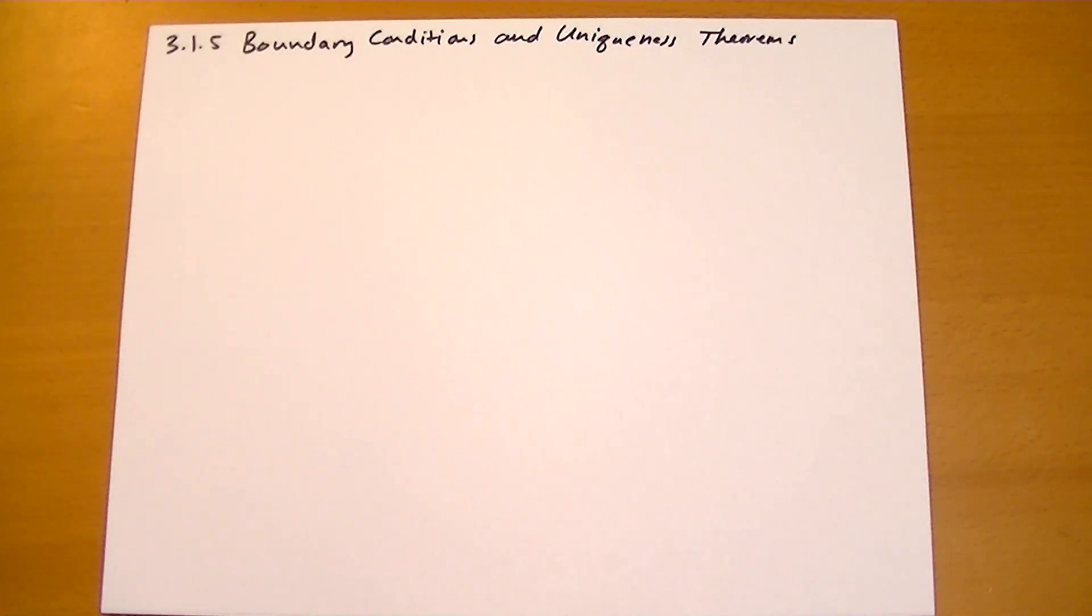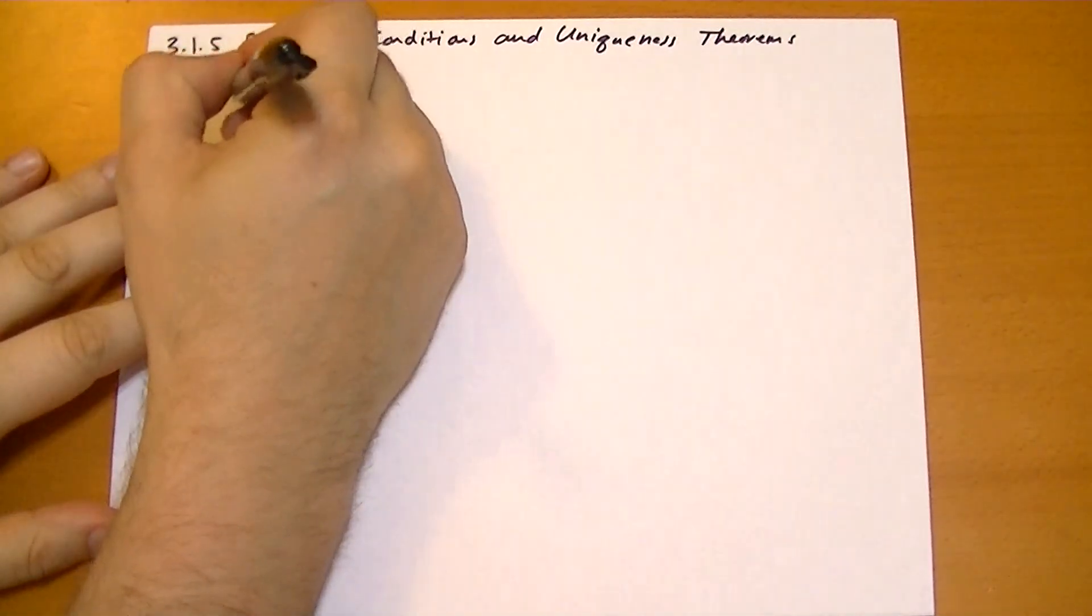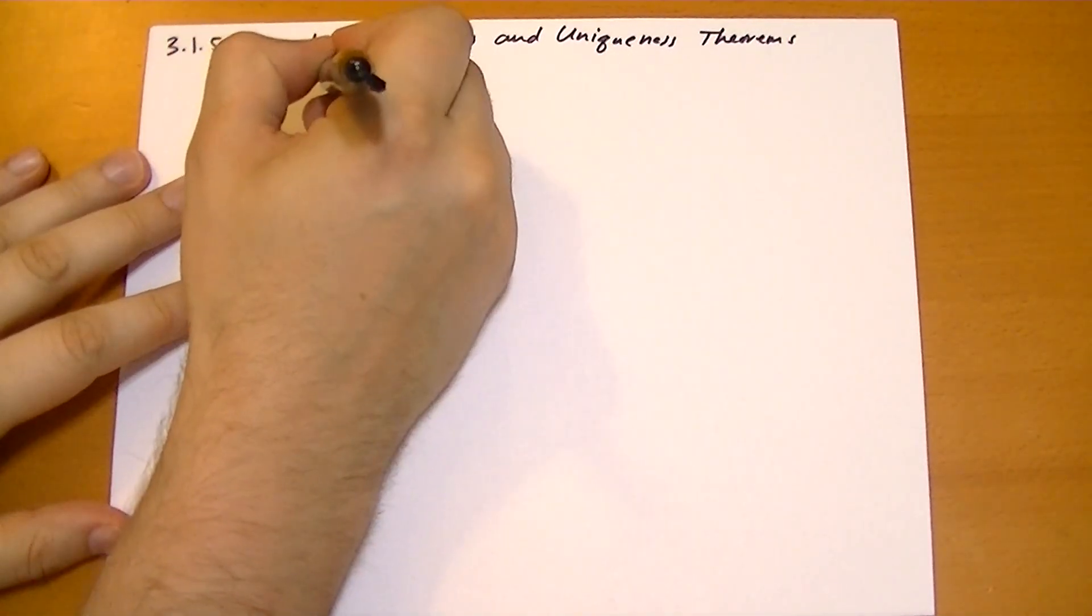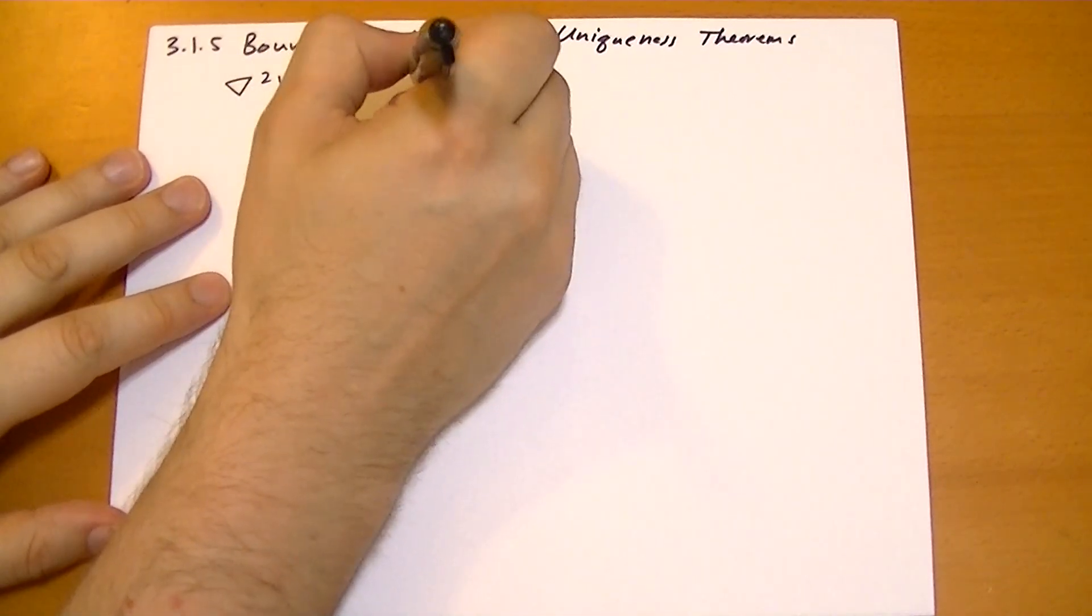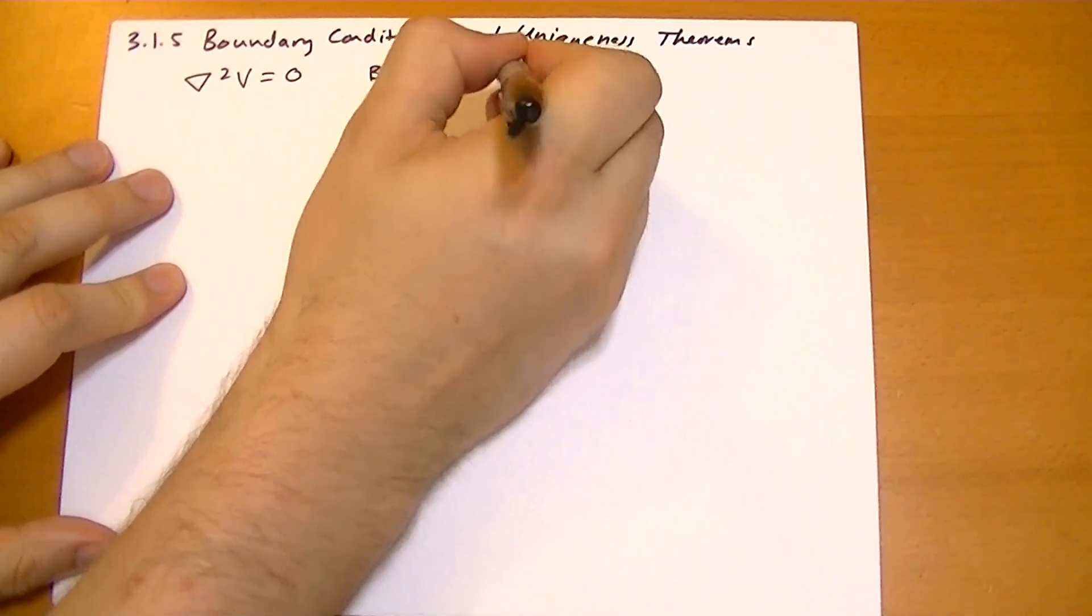One of the neat things about Laplace's equation is that we can derive uniqueness theorems for them. The question that inspires the Uniqueness Theorem is: given that your Laplacian equals zero and given some boundary conditions, is that enough to get one solution?